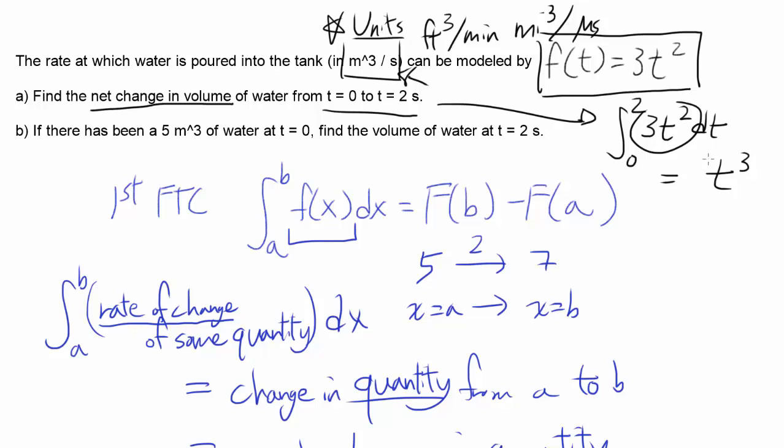What do we have to differentiate to get 3t squared? That's t cubed. When you differentiate t cubed, you get 3t squared. Another way is by ignoring 3 and differentiating t squared to get t cubed over 3. And 3 is canceled out, yielding you t cubed.